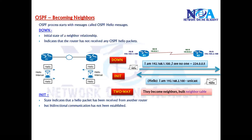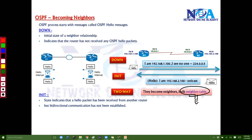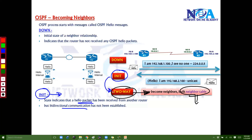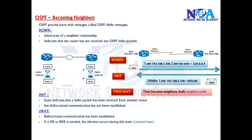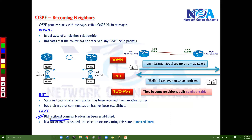Once a reply is received, they move to the Two-way stage, where both routers are neighbors and they establish something called a neighbor table. The Init stage indicates that hello packets have been received from the other router, but bidirectional communication has not yet been established. Once it completes, it moves to the Two-way stage - the hello has been sent and a reply received, meaning bidirectional communication has been established.